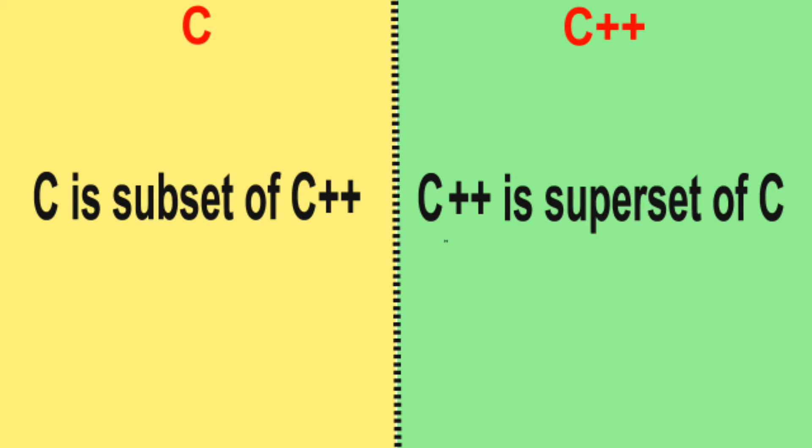Difference number 4: C is a subset of C++. C++ is a superset of C.